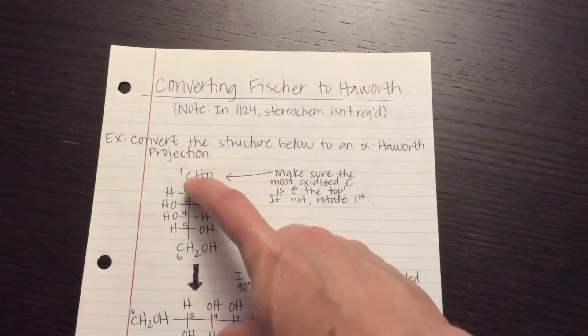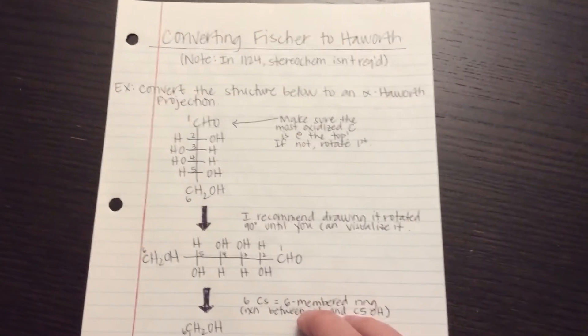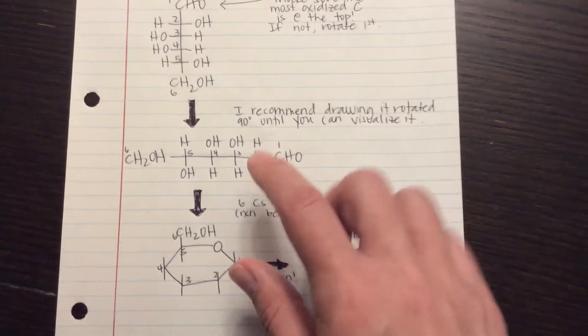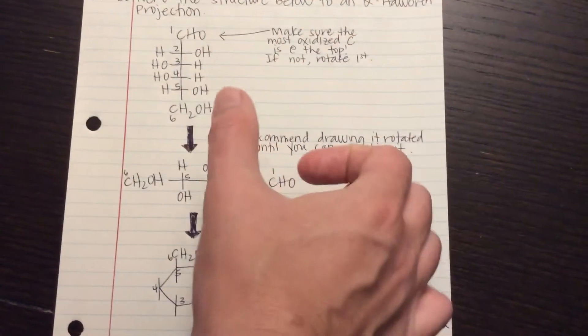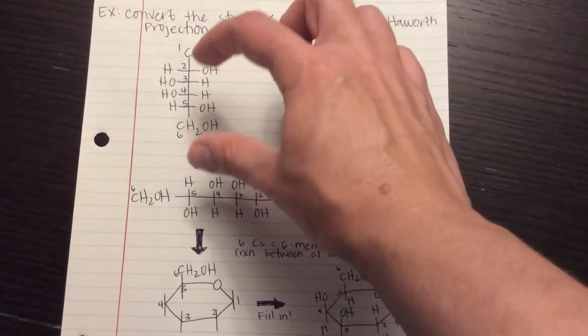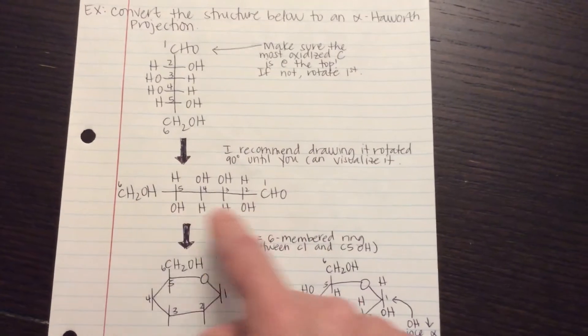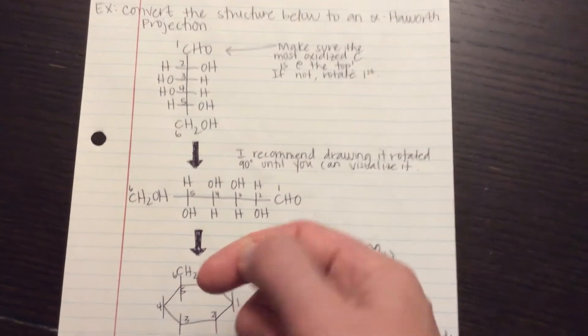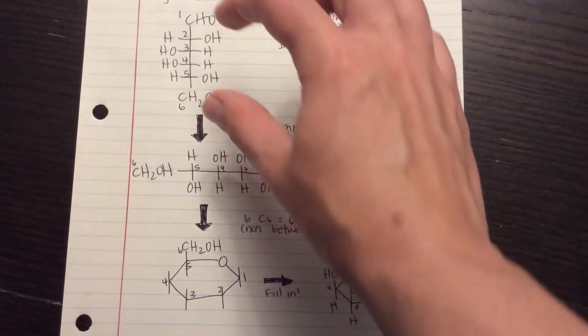And then we just number 1, 2, 3, 4, 5, 6. Now, this is something I recommend doing until you can visualize what this looks like rotated. A lot of students need to make this physical on their paper. But once you've done this several times, you can do this in your mind.